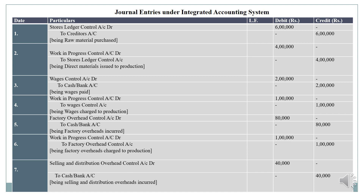Fourth transaction: wages charged to production. Wages are charged to production activities. Since production is still in progress, work in progress control account is debited to wages control account. Wages are being charged to production activities.